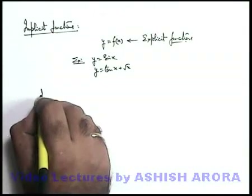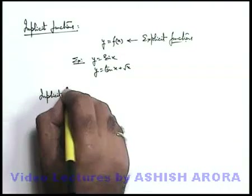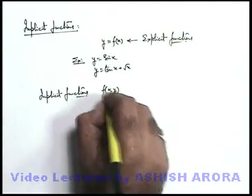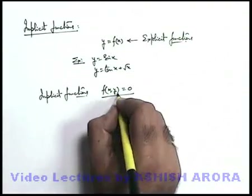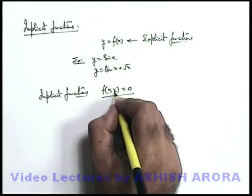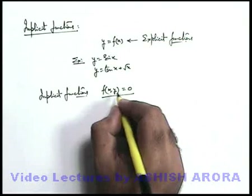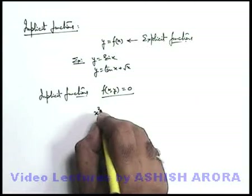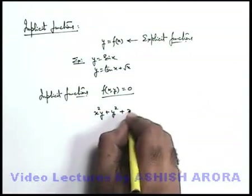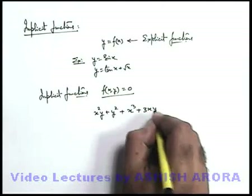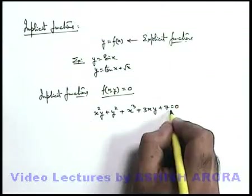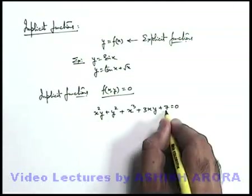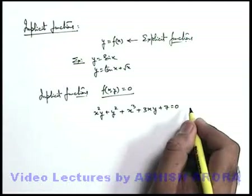On the contrary, there are other categories of functions which we call implicit functions. These are the functions which are written as f(x, y) is equal to zero. Here this is an expression containing the values of x as well as that of y, in which when we put the value of x we get an expression in y, and on solving which we get the values of y.